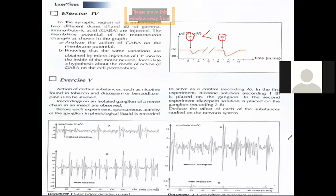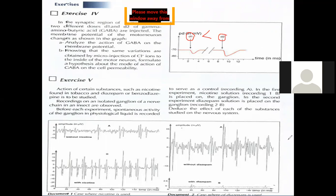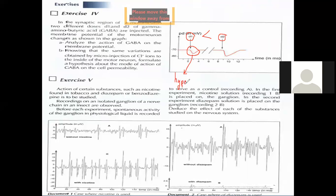At t equal zero milliseconds, the potential difference was around minus 17 millivolts — the resting potential. It remains constant until t equals two milliseconds, where the first dose is injected, which leads to a decrease of the potential difference to around minus 75 millivolts. The decrease in the potential difference below the resting potential is called hyperpolarization.